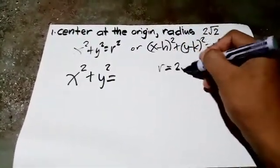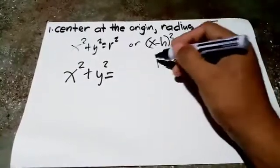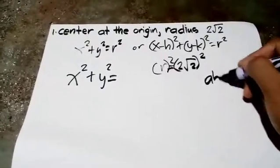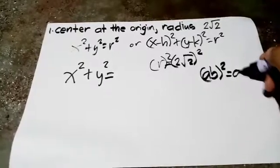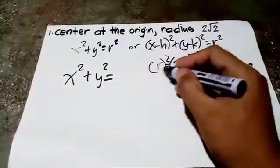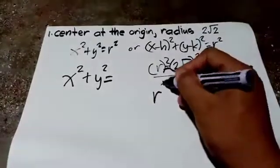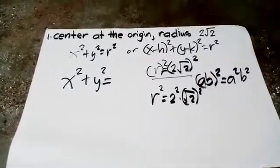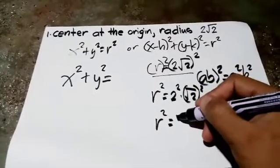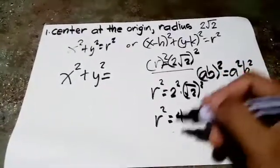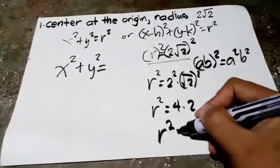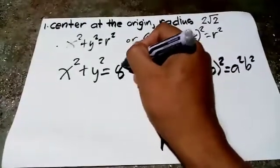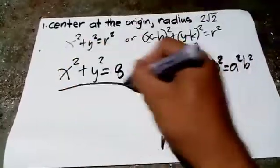We are given r = 2√2. To get r², square both sides. Using the law of exponents, (ab)² = a²b², so r² = 2² × (√2)² = 4 × 2 = 8. Therefore, the answer is x² + y² = 8.